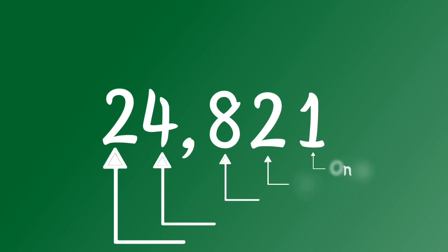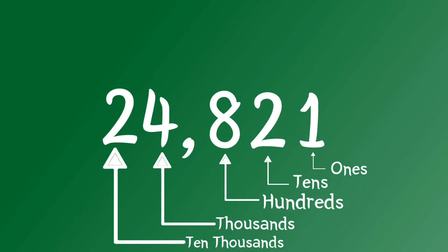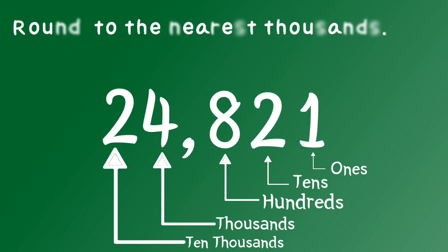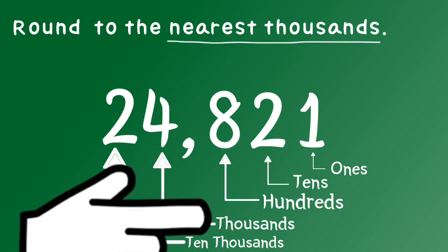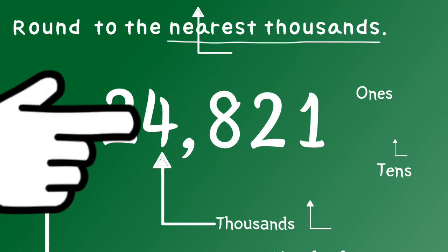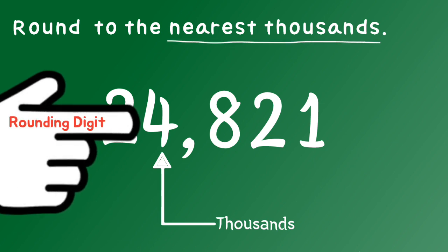In this part, we have to remember the place value of a digit in a number. For example, round this number to the nearest thousandths. Four is in the thousandths place, so four is the rounding digit.